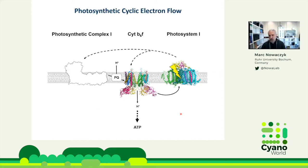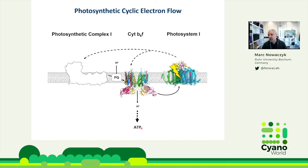There is also an alternative electron pathway — the so-called cyclic electron flow. Here, only Photosystem I takes part. Electrons are transferred back to the plastoquinone pool, and then to Photosystem I to generate this cycle. By this, only ATP is generated. This is a regulatory mechanism controlling the ATP to NADPH ratio dependent on the metabolic state of the cyanobacterial cell. We were particularly interested in one specific route via the so-called Photosynthetic Complex I.